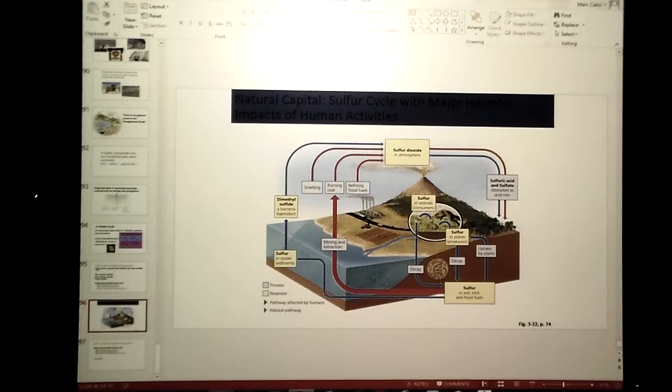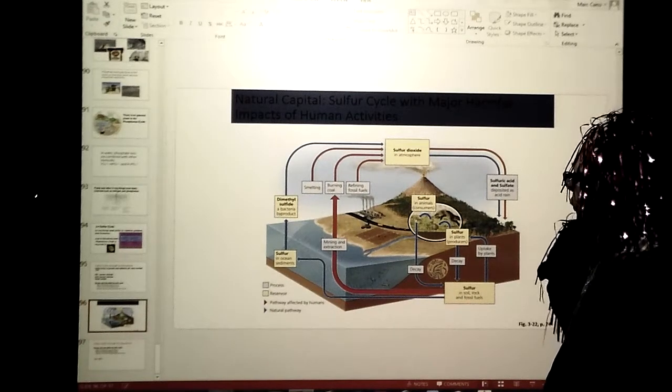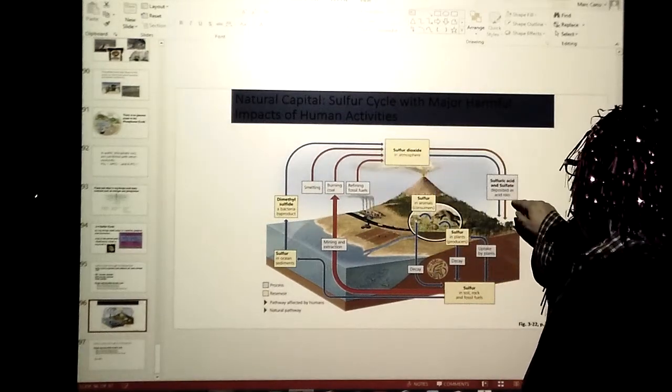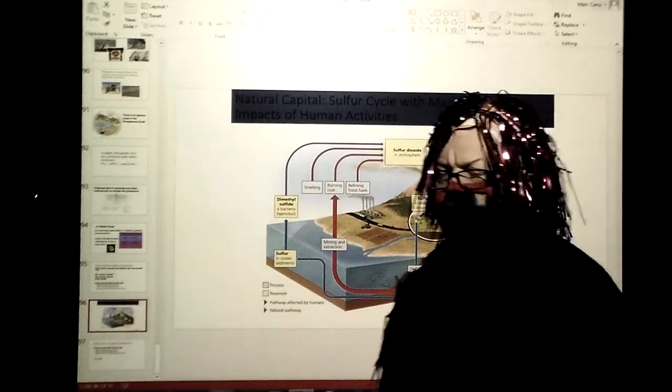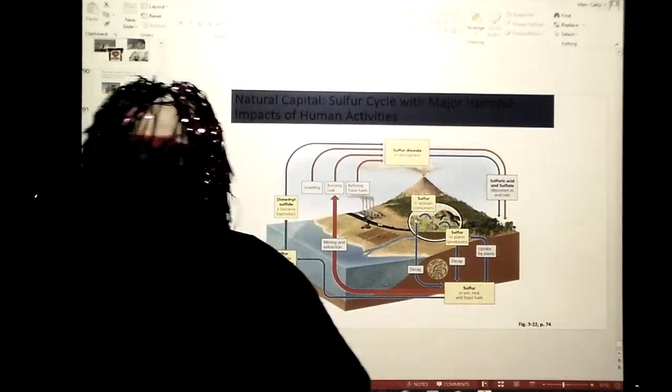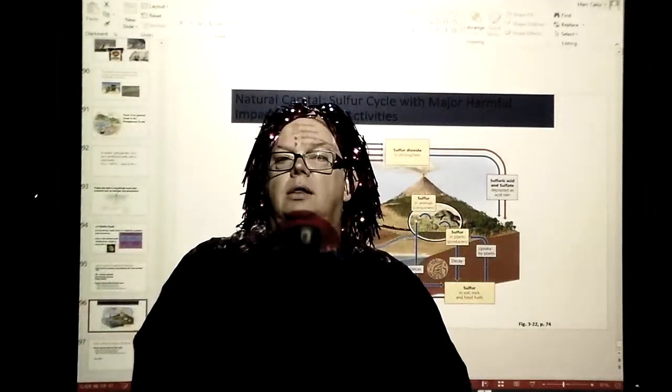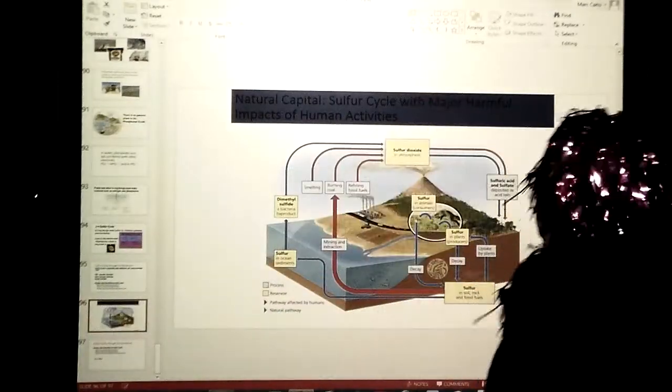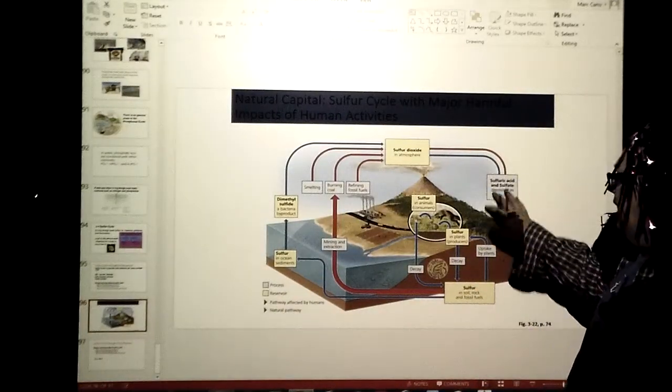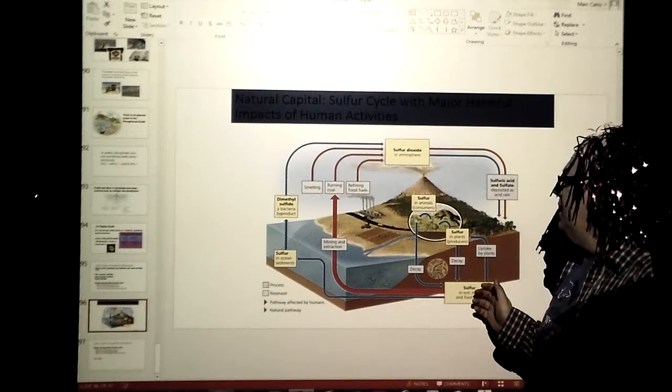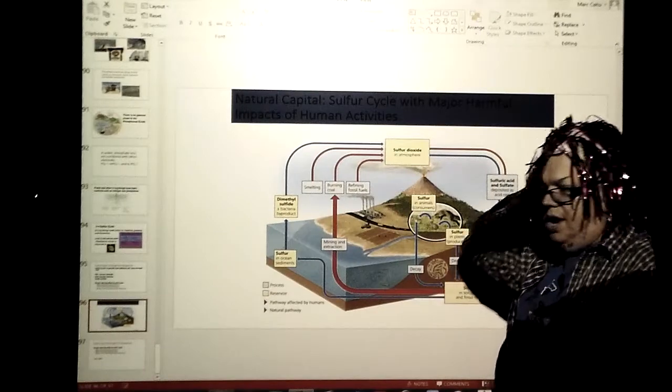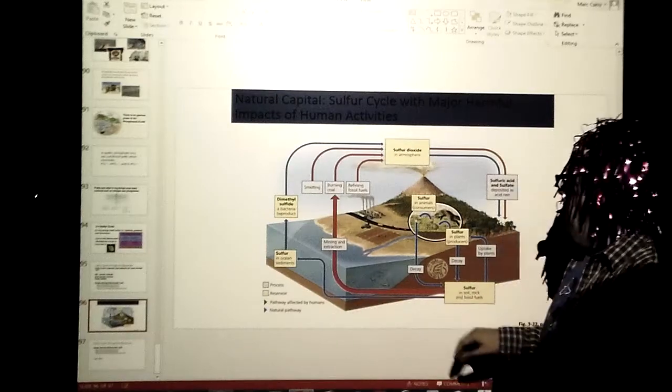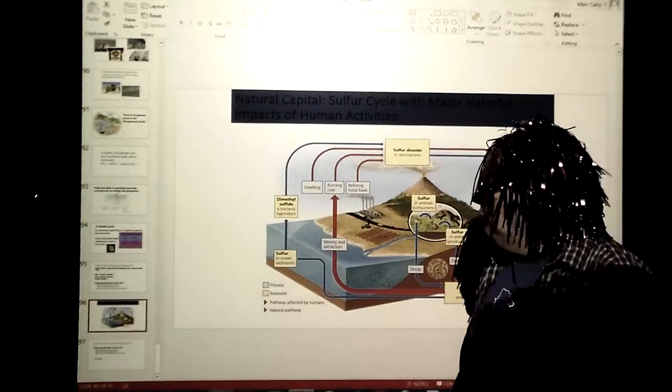This is what we have for our sulfur cycle here in the form of sulfur dioxide in the air. You get sulfuric acid and sulfate deposited as acid rain, so that is a problem. We will talk about acid rain later on. There is also acid fog. It ends up working its way down into the soil and then of course it gets taken up by mining extraction because we do use sulfur for a lot of things. It can also work its way into the ocean sediments as well, and I'm going to have to wrap this bad boy up.